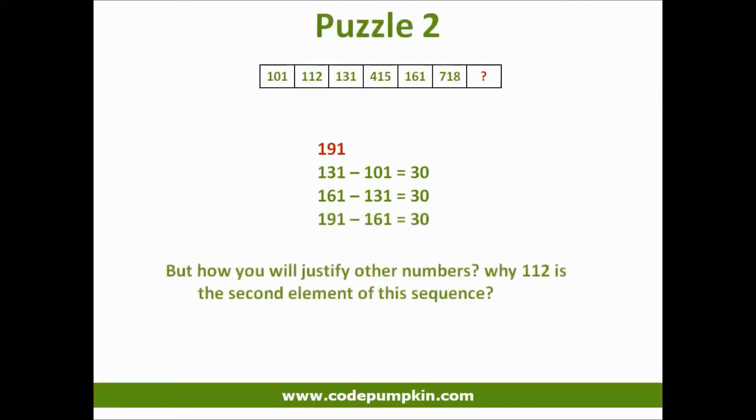But how they will justify other numbers? Why 112 is the second element of this sequence? 191 is not the correct answer to this puzzle.